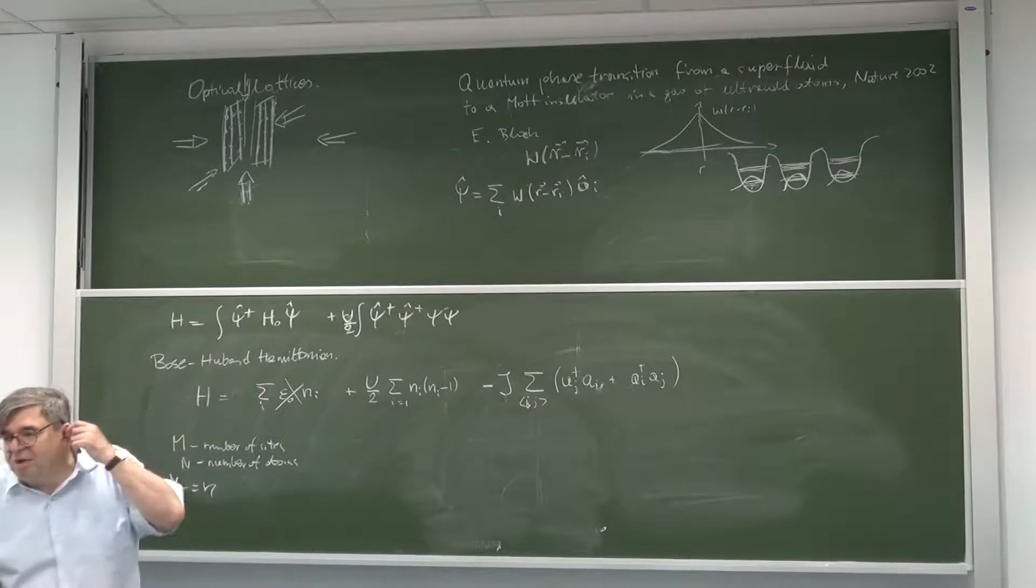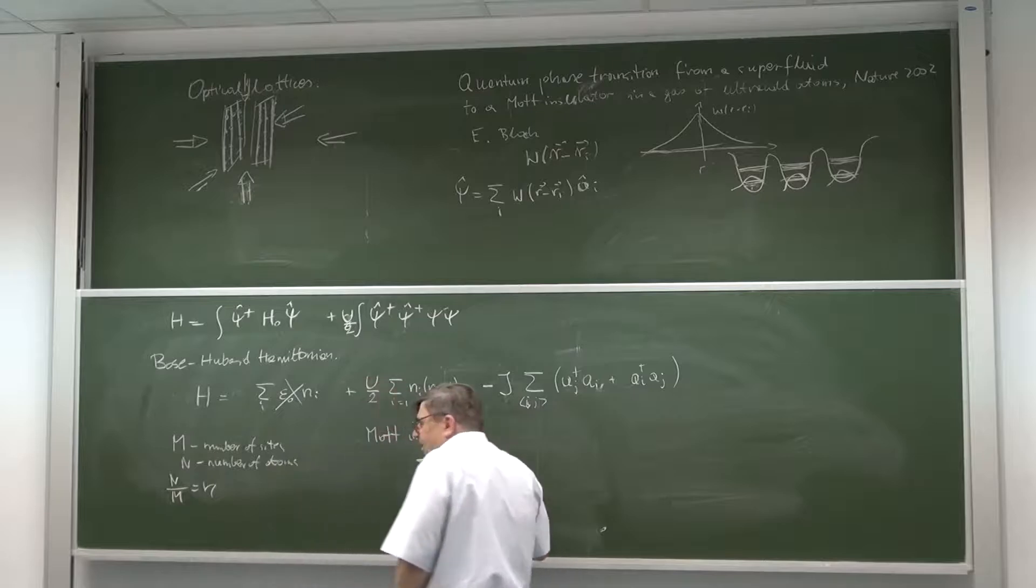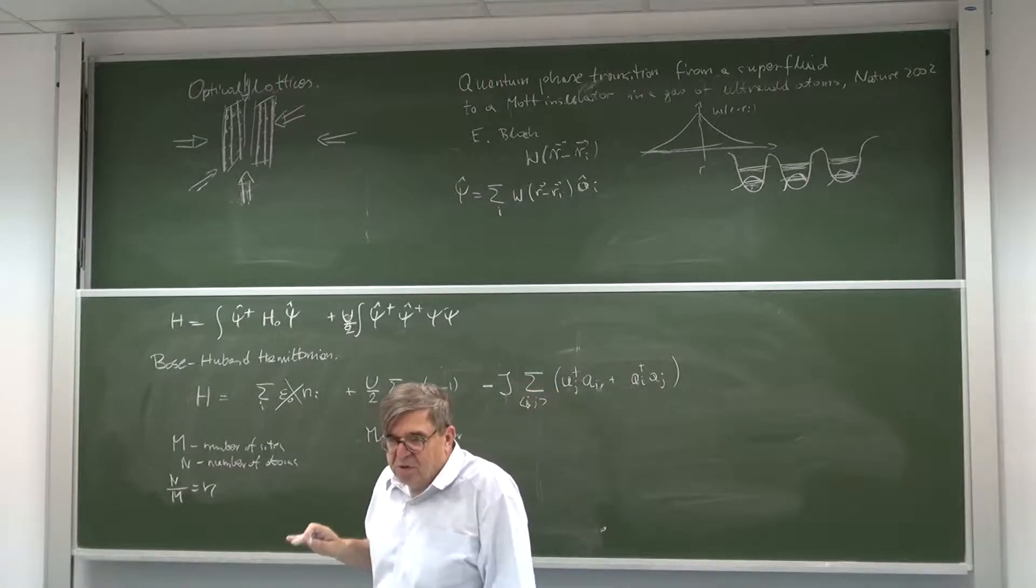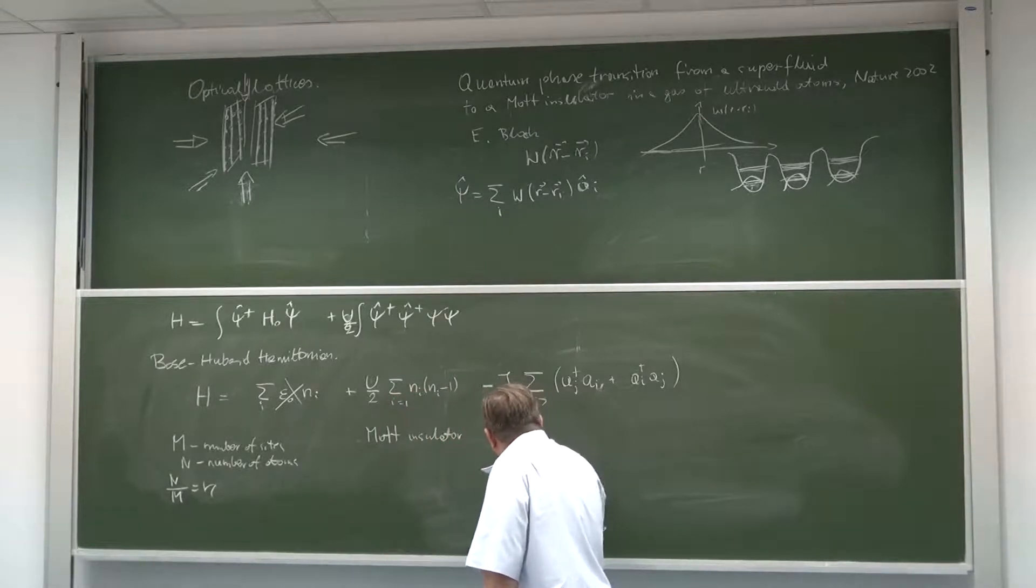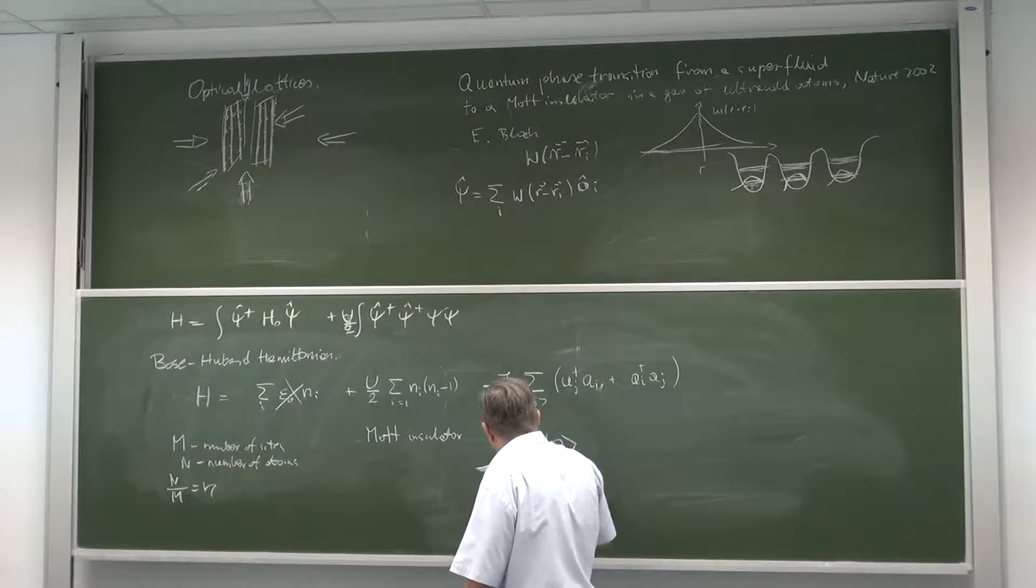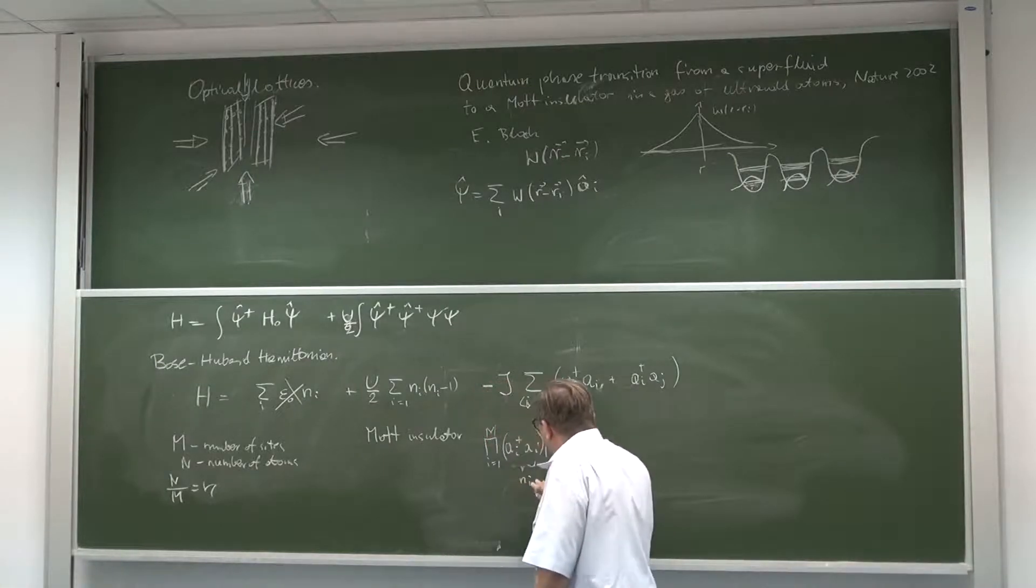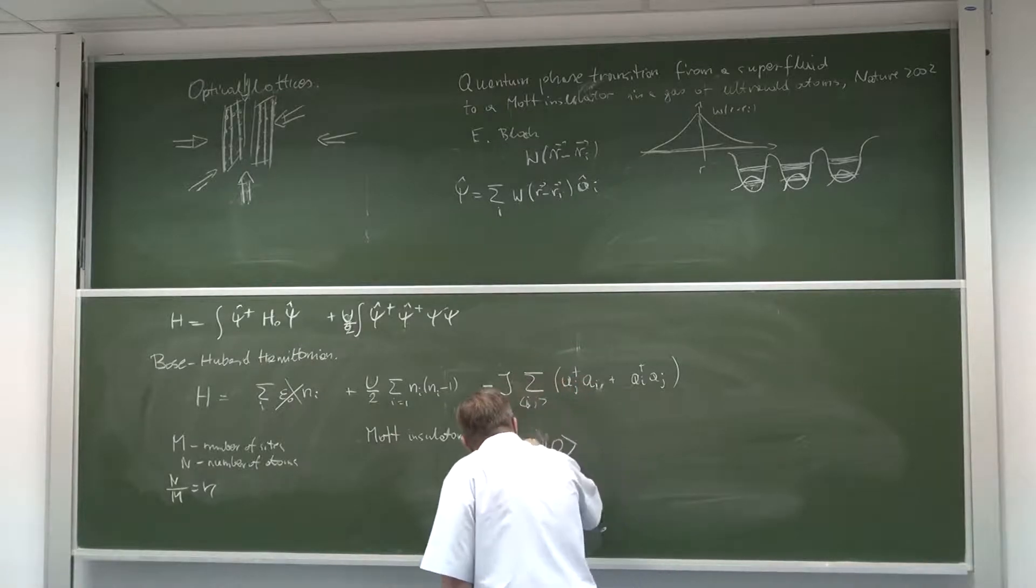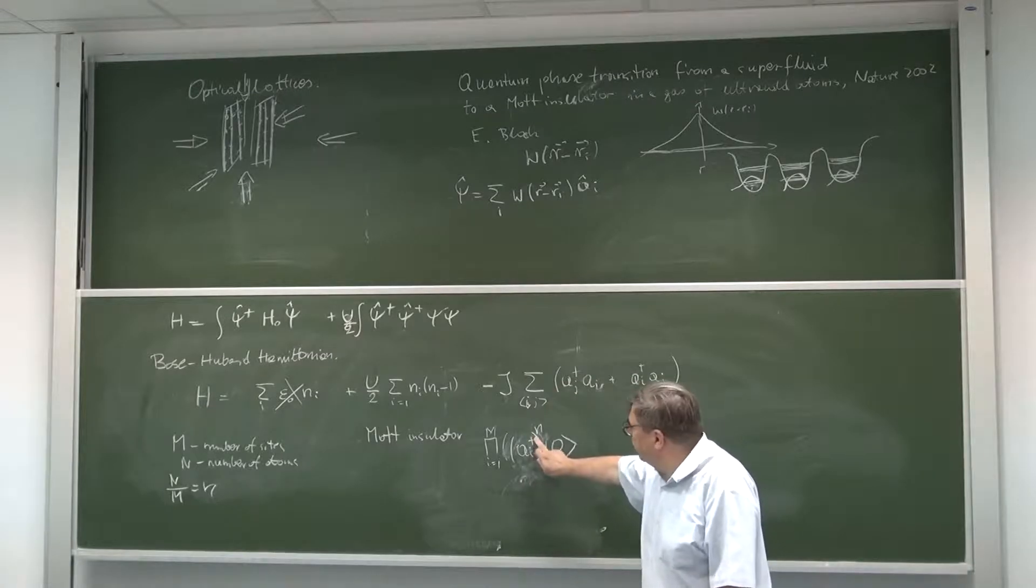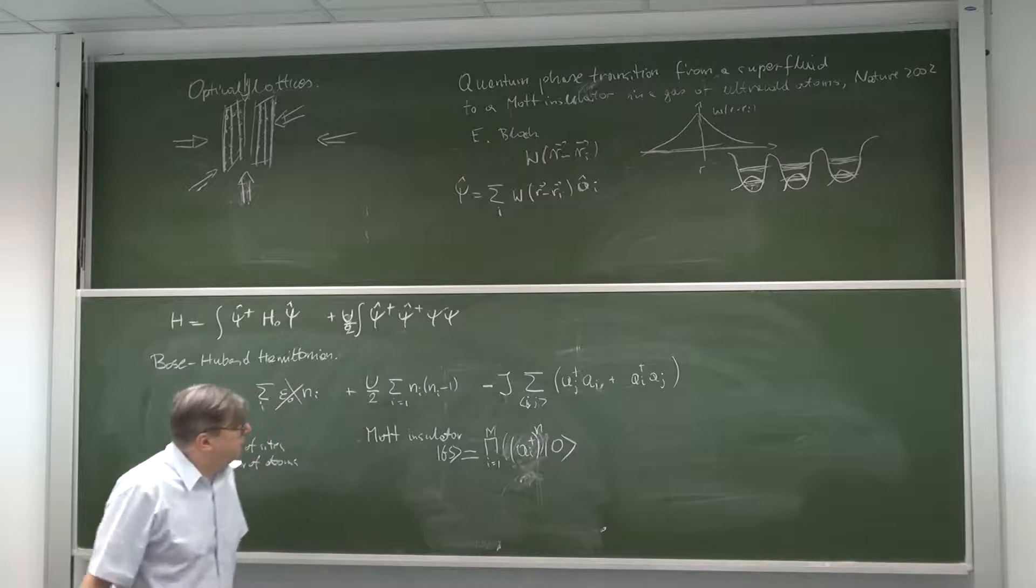The Mott insulator is a state where you have on every atom site a given number. So it is a product, you have a_i^dagger to the power n acting on the vacuum, product over all sites. You create atoms on a site to power n. This is the wave function. You have exactly n atoms and you have a product, this is the Mott state.